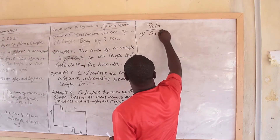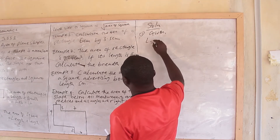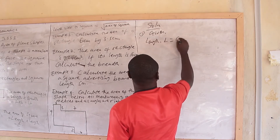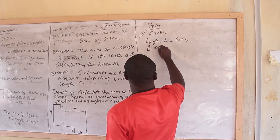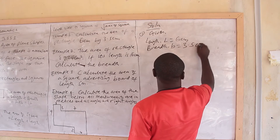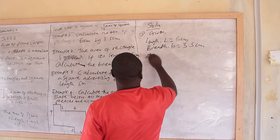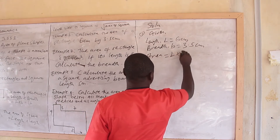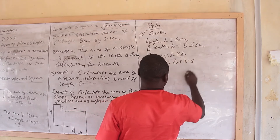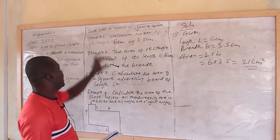Given: length L equals 6 cm, breadth B equals 3.5 cm. Area equals length times breadth, which equals 6 cm by 3.5 cm, and equals 21 cm squared. That is the area for the rectangle — that is example one.